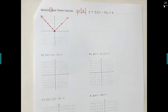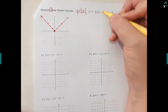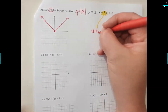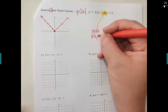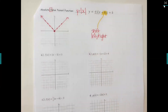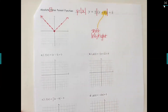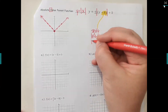Any equation that has absolute value bars should have the same V shape. When we put numbers in, it changes how the V looks. Underline the h. The number inside the bars with x is going to shift your graph left or right. There's one tricky part: because that number is grouped with x inside the bars, you're going to do the reverse direction — opposite.